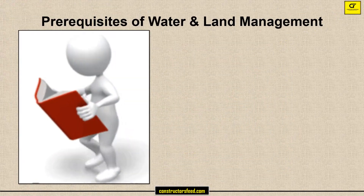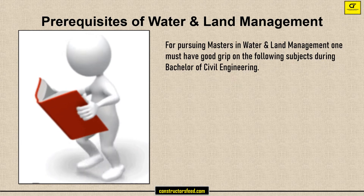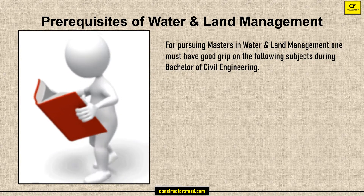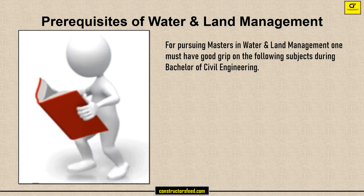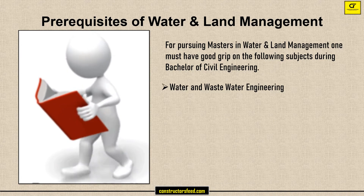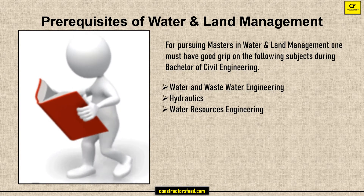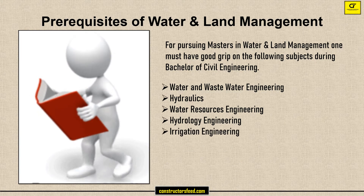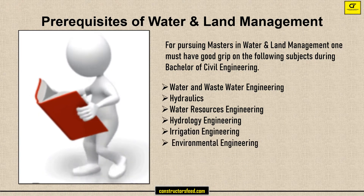Prerequisites of Water and Land Management. For pursuing Masters in Water and Land Management, one must have a good grip on the following subjects during Bachelor of Civil Engineering: Water and Wastewater Engineering, Hydraulics, Water Resources Engineering, Hydrology Engineering, Irrigation Engineering, and Environmental Engineering.